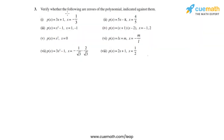The third question says: verify whether the following are zeros of the polynomial indicated against them. Let's take the first part: p(x) = 3x + 1, and we have to check whether x = -1/3 is a zero of this polynomial.